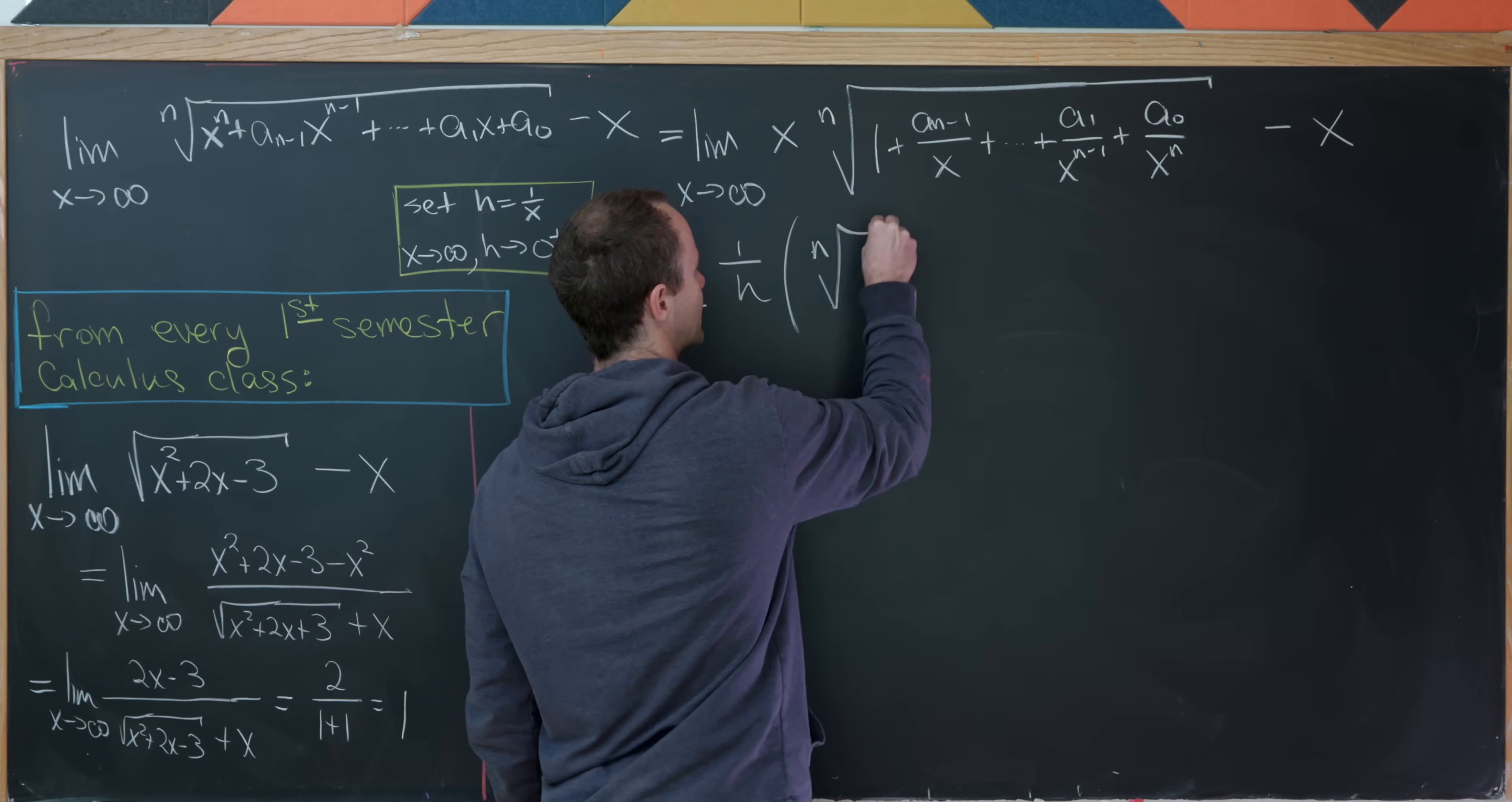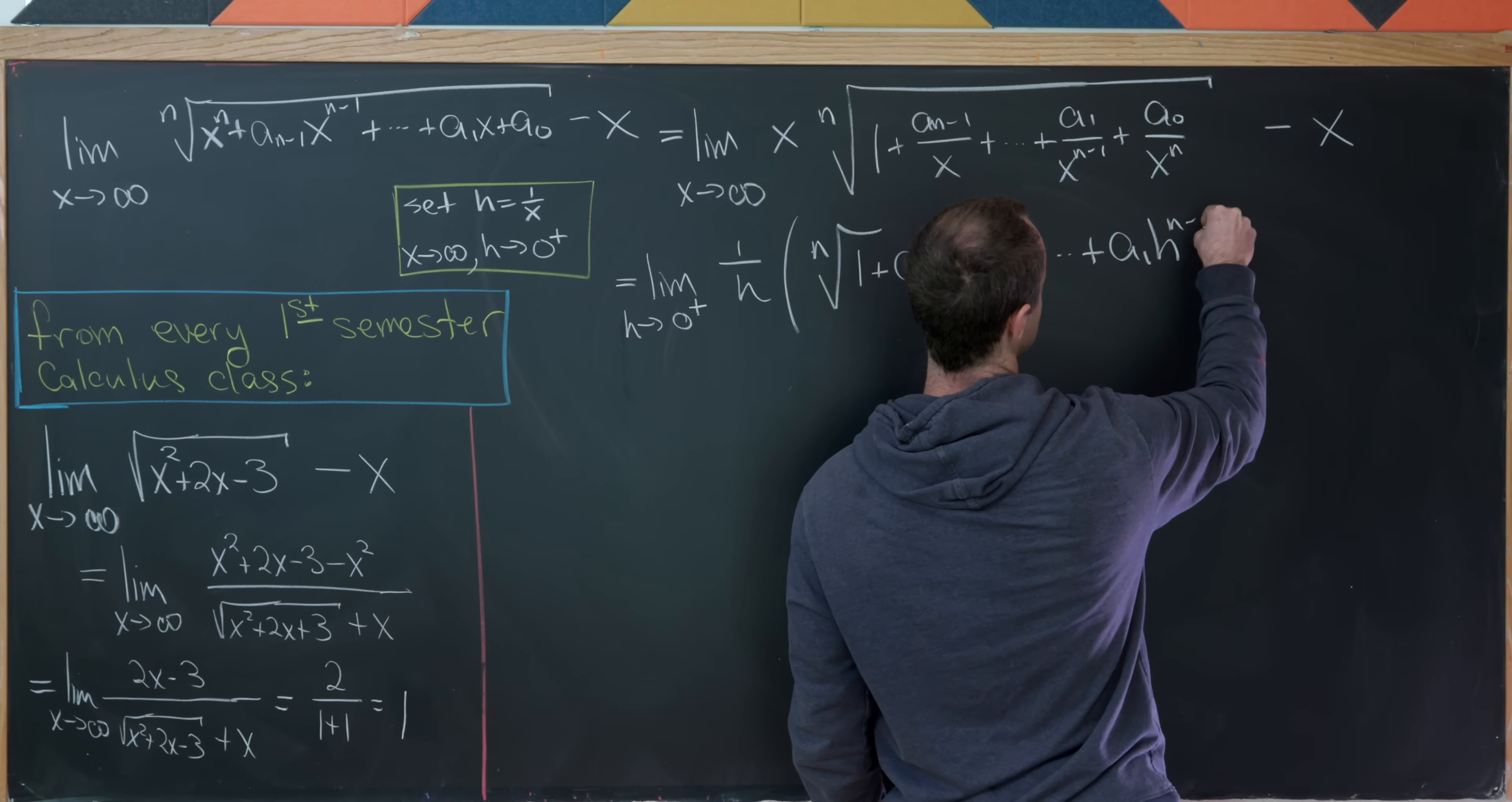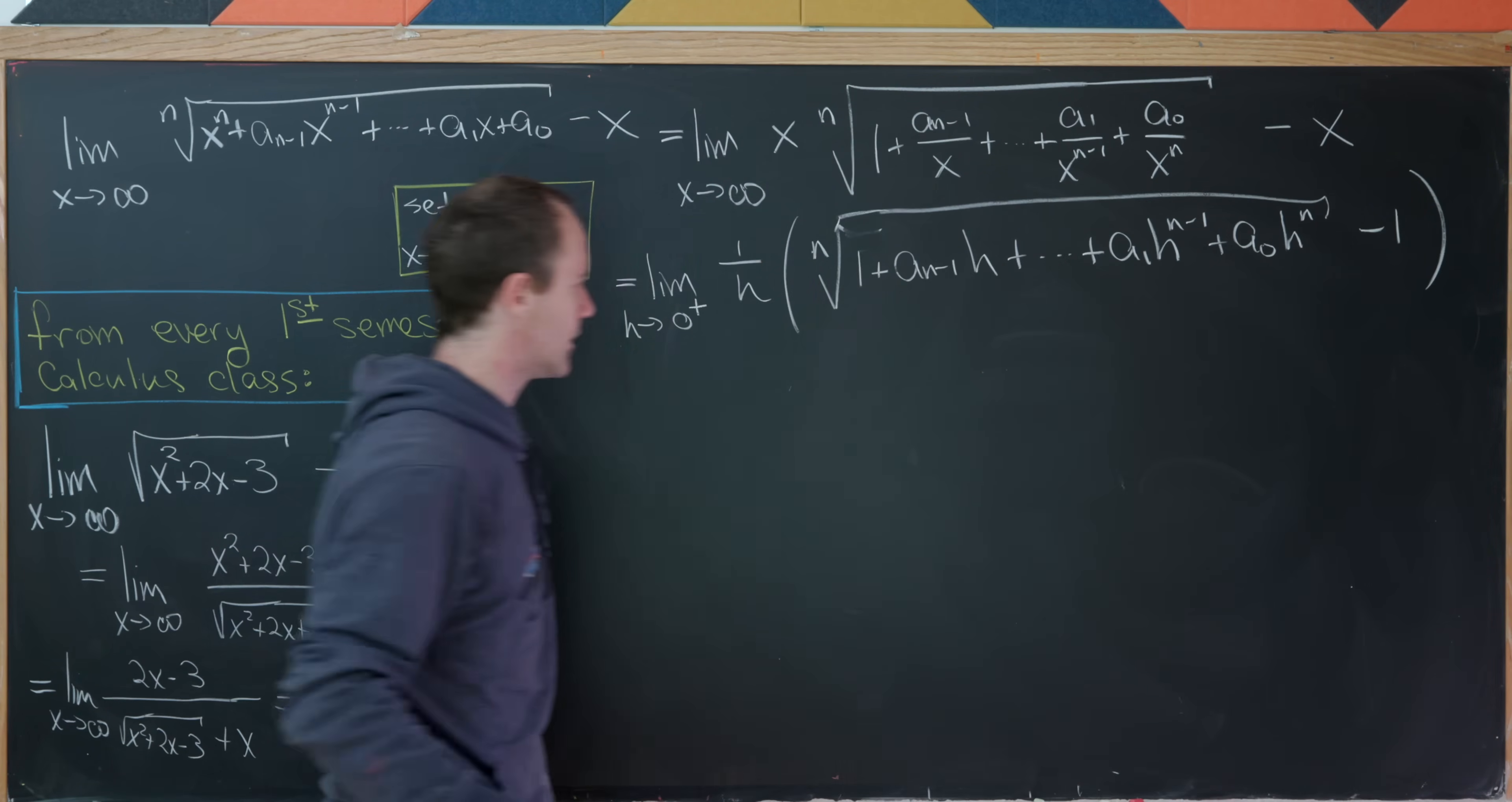And then I'll have the nth root of 1 plus a sub n minus 1 times h, plus all the way down to a1 times h to the n minus 1 plus a0 times h to the n. And then this is going to be minus the number 1.